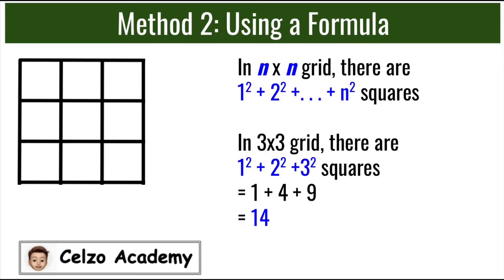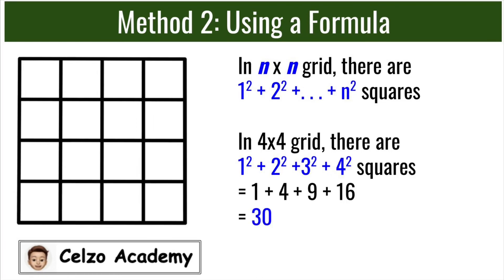If it's a 3x3 grid, using the formula, we will have 1² plus 2² plus 3². Simplifying this, we have 1 plus 4 plus 9, so we have 14 squares total. If it's a 4x4 grid, there will be 1² plus 2² plus 3² plus 4², and that is 1 plus 4 plus 9 plus 16, so we have 30 squares total.